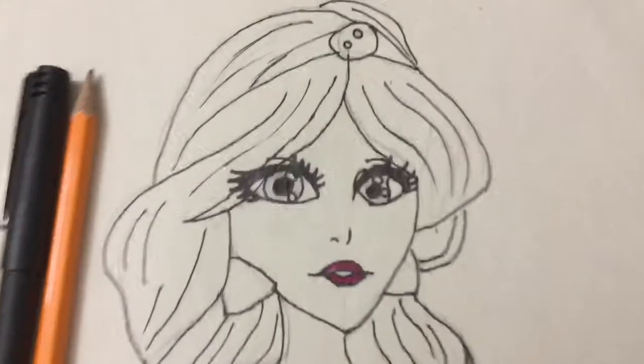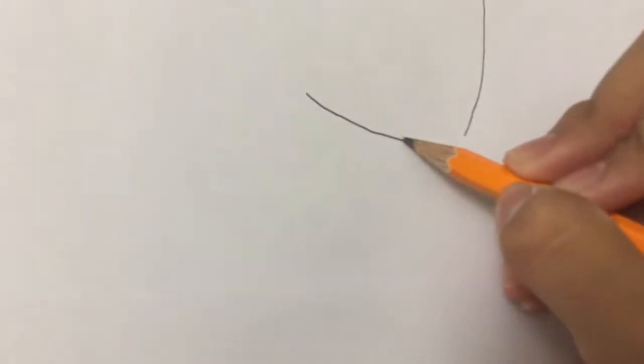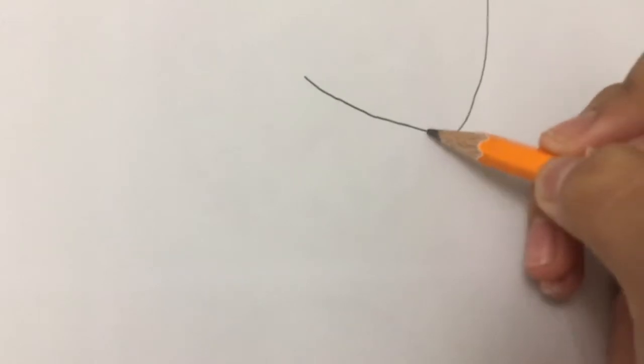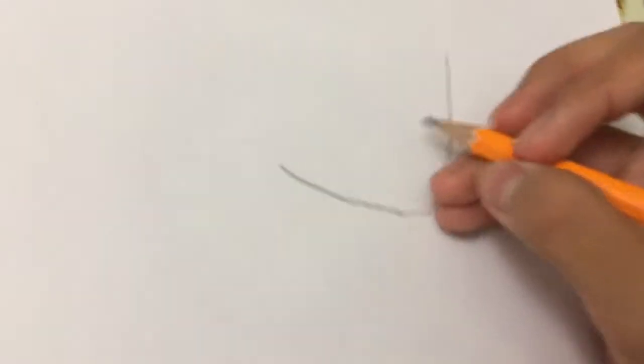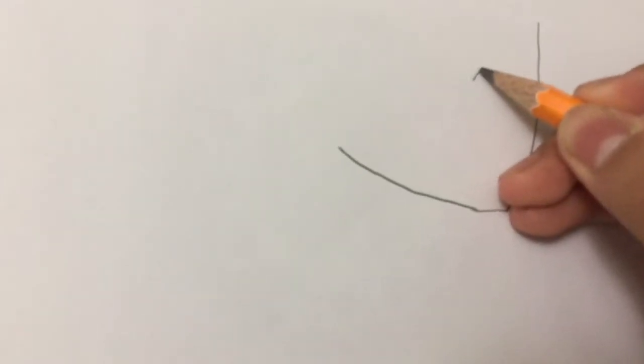Hey guys, today I'm going to show you how to draw Jasmine from Aladdin. Let's get started. First for her face you're gonna draw a curve and go down and then stop at her chin and then go down like this, extended there. And let's draw the eyes, so from here.